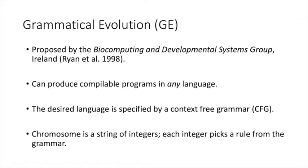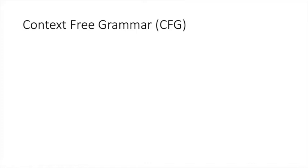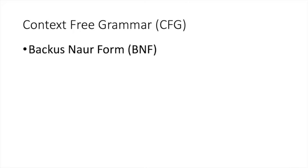How does that translation happen? Well, the context-free grammar helps in this process. Context-free grammars are written out in a special notation called the Backus-Naur Form. This is a well-known notation in computer science used to define the rules of a context-free grammar. These rules are also called the production rules.